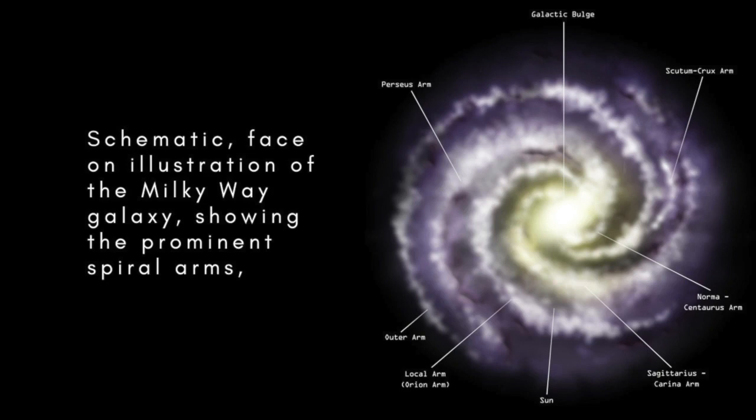On an altogether different scale, the arms of spiral galaxies are roughly logarithmic spirals. Our own galaxy, the Milky Way, is believed to have four major arms, each of which is a logarithmic spiral with a pitch of about 12 degrees.